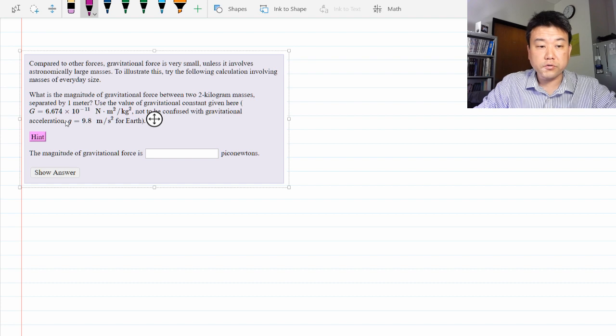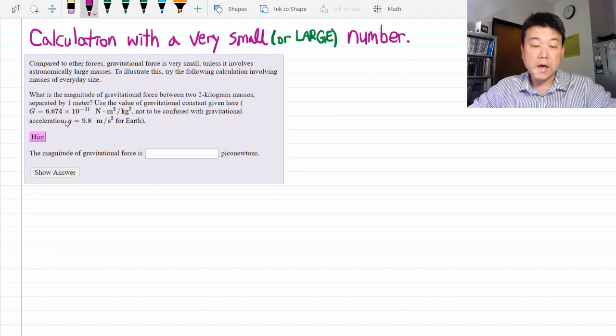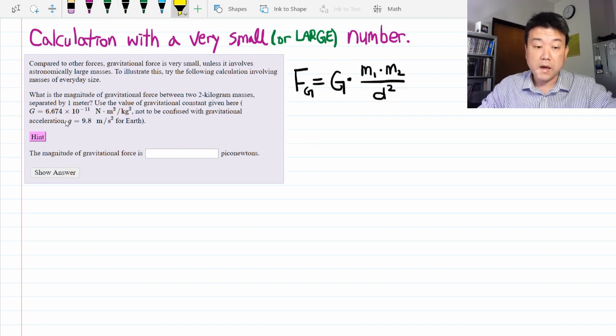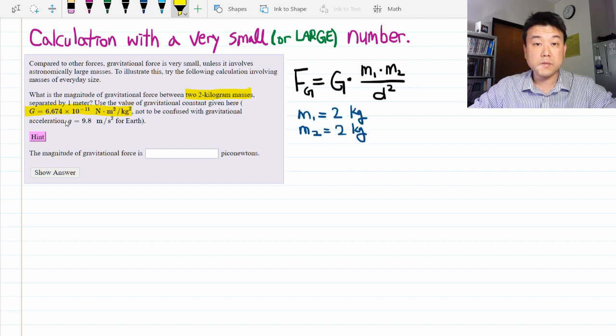So here you are doing Newton's universal law of gravitation calculation, or really calculation with a very small number. Here you can look up the formula you need to use from the book, Newton's law of universal gravitation, and you are given the gravitational constant G. The masses are given in the question. Let me write it out for clarity. And the distance is also given in the question.